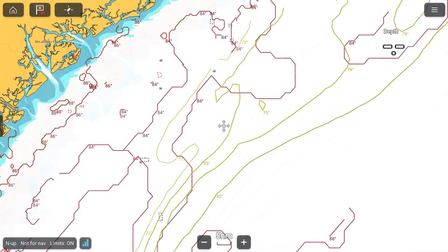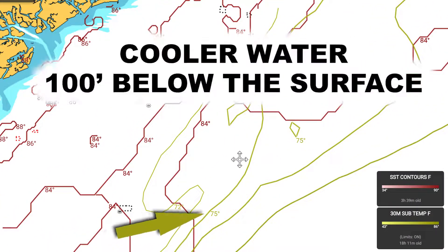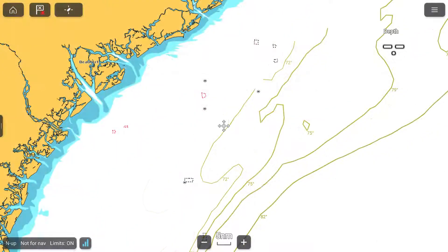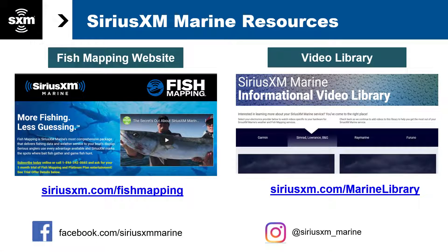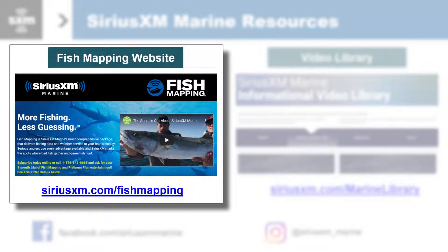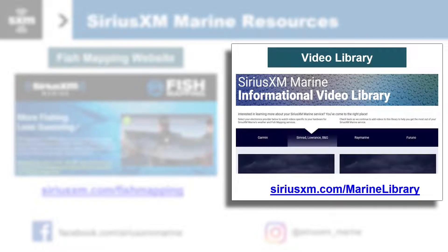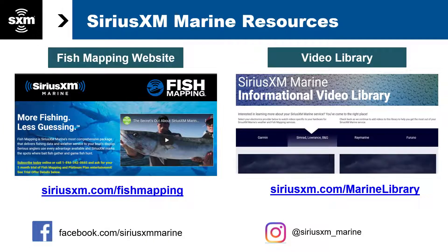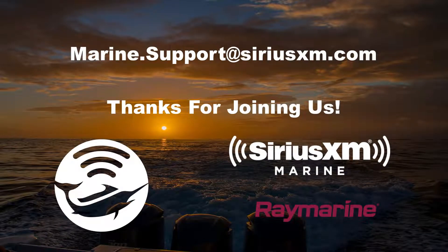This feature has been proven to be very effective for finding cooler thermoclines well below the surface when large areas of the surface temperature itself are all the same temperature. Note, there will be no lines where the water depth does not exceed 30 meters. For additional information and resources, please visit our fish mapping website at SiriusXM.com/fish-mapping. For videos specific to your marine display, please visit our marine video library at SiriusXM.com/marine-library. Please also stay in touch by joining our social media sites. We encourage all of our SiriusXM Marine subscribers to share your comments, including your success stories. Or, if you need support, please reach out via email to marine.support@SiriusXM.com. Thank you.